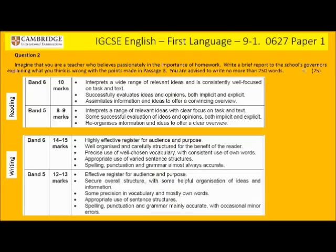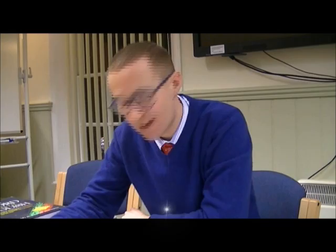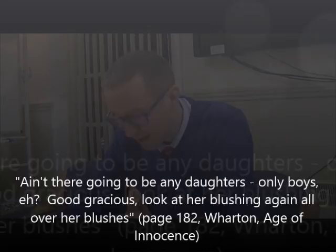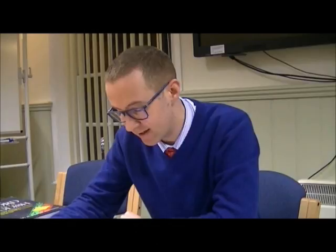I will now explore the mark scheme in more detail and show you my own response. Compare your answer to the one on screen and make a judgement about your own score. Don't be too generous — complacency is a root of all evils. Within the reading mark scheme you need to have interpreted a wide range of relevant ideas, ensuring you have used your own words and not just copied. Both implicit and explicit ideas need to be taken. In a recent lesson we were reading Edith Wharton's The Age of Innocence — in chapter 21 a grandmother teases her newlywed granddaughter. The explicit meaning is that the newlywed is going to give birth at some point; the implicit meaning is that she has been having sex with her husband.